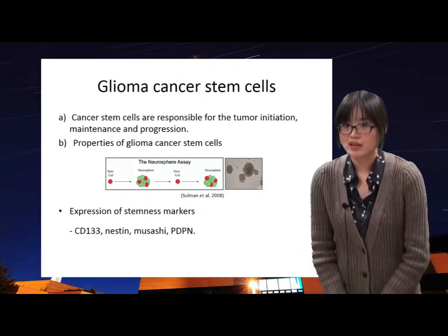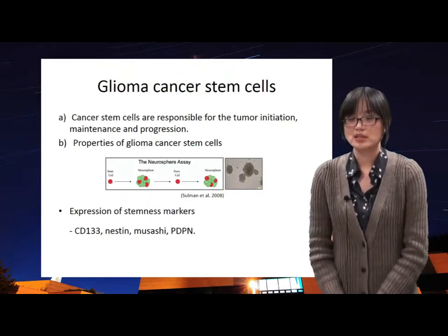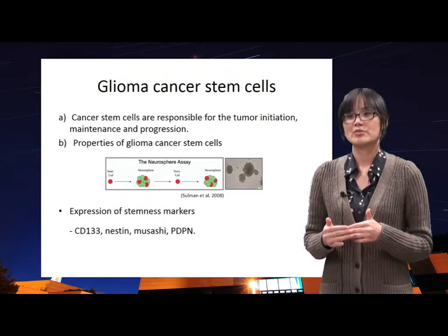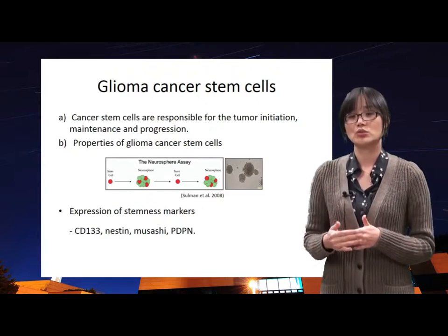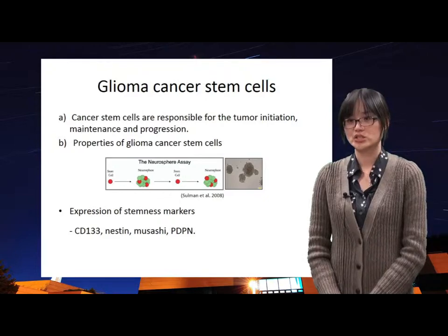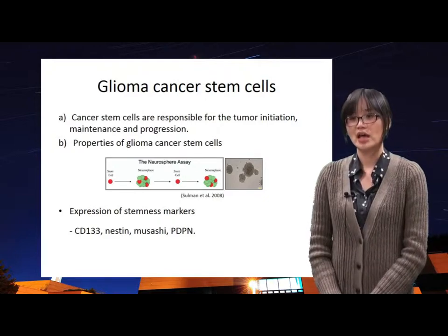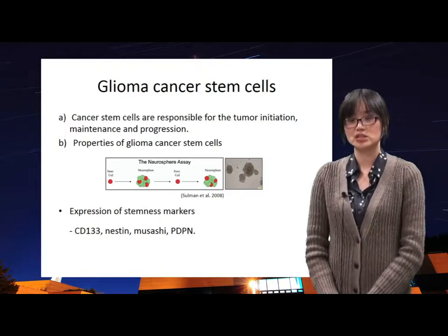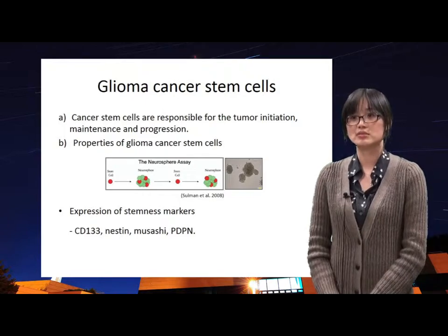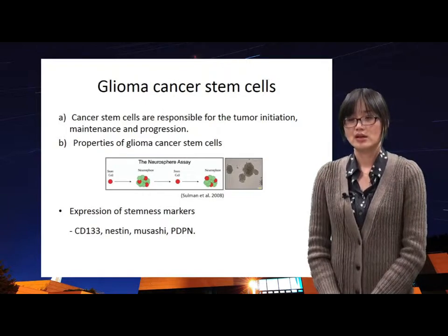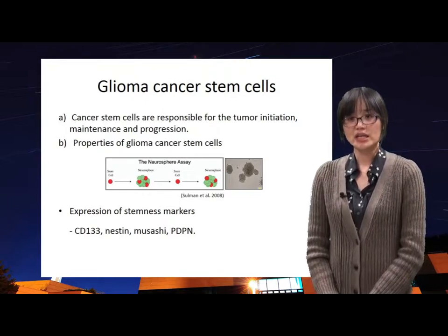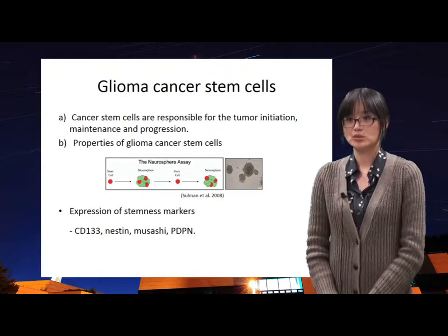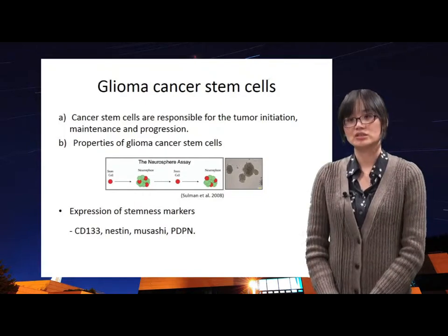If the cell isolated from glioblastoma is a stem cell, the cells can be attached to a dish in standard cell culture conditions, and the morphology of the cell in culture condition can be formed like a stem cell. After checking their properties, the stem cell markers of the cells were analyzed.